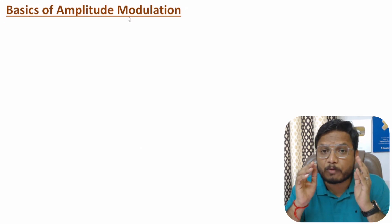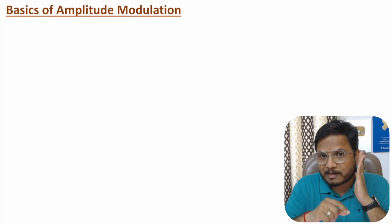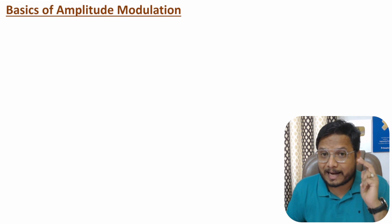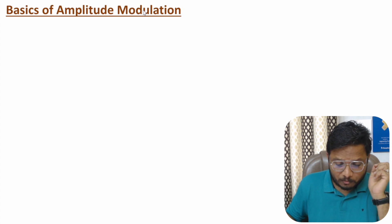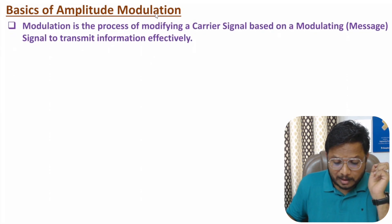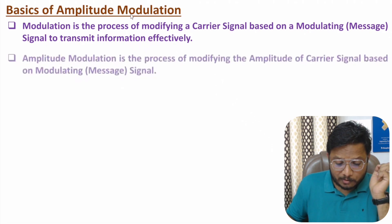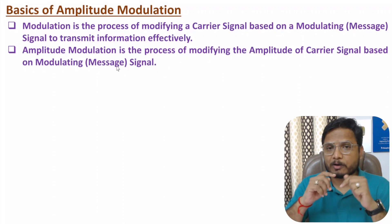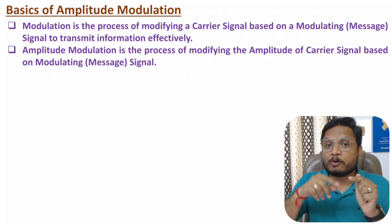First of all, you need to understand what is modulation. Modulation is a process which converts a low frequency message signal into a high frequency signal. What we do is we change the characteristics of carrier signal with respect to modulating signal. In amplitude modulation, what we do is we change the amplitude of carrier signal with respect to message signal.